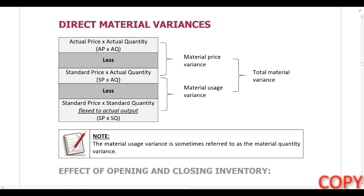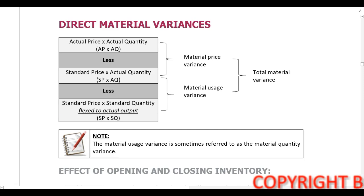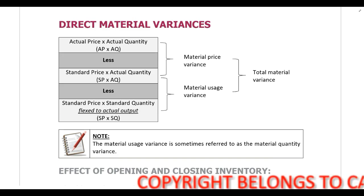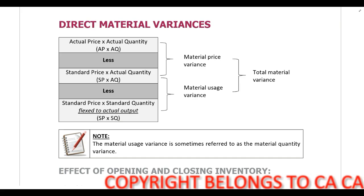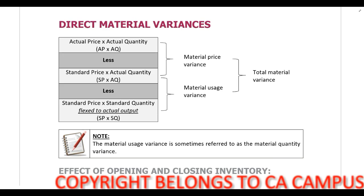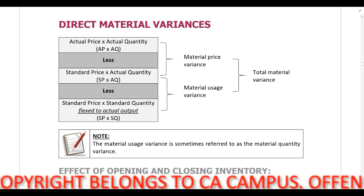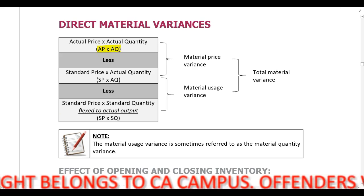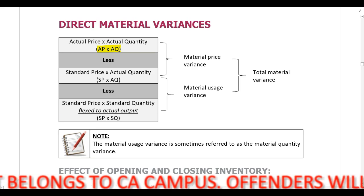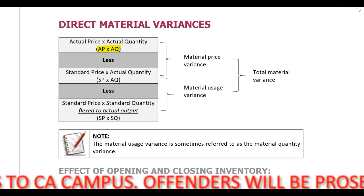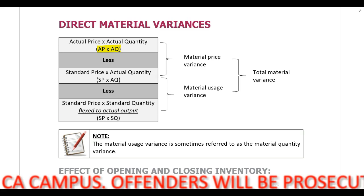Let's start with the direct material variances. In the lecture notes I have included the formulas, but I don't want you to study formulas — I want you to follow a logical approach to all variance calculations. The logical approach is as follows: first, we always start with the actual information, so the actual material cost. You calculate the actual cost by taking the actual price and multiplying by the actual quantity. Always start with the actual, then we change one thing at a time.